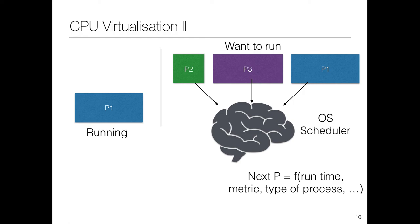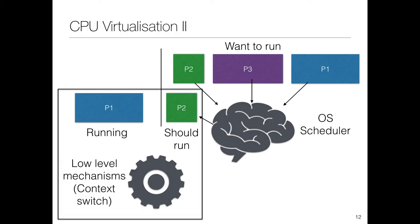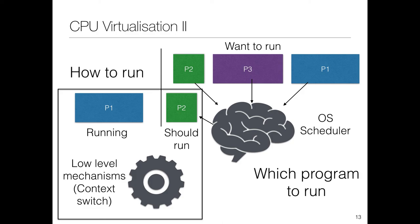To summarize: the first component is the OS scheduler, which tells you which program to run. Let's say the scheduler decided to run P2. Now we require low-level mechanisms which actually go about running P2. In these low-level mechanisms, what we do is take out P1, store its state, bring in P2 — and that's how a context switch happens. So we have two components: one is the high-level component deciding which program to run; the second is the low-level mechanisms specifying how to run these programs.